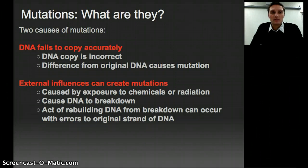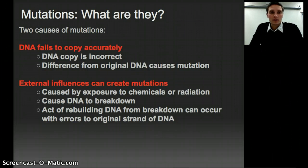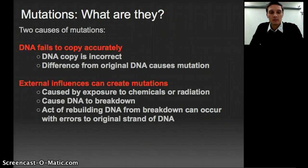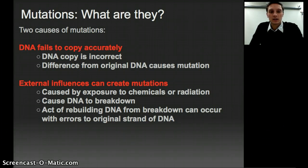There are two types of mutations. The first is when DNA fails to copy accurately — there's an error that occurs while the DNA is copied, so it causes a different strand of DNA than the original. That's a mutation. It can be just one nucleotide base or multiple nucleotide bases. Even a single nucleotide being different from the original strand is technically a mutation.